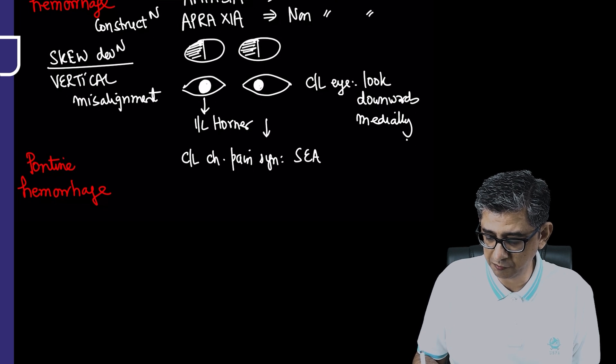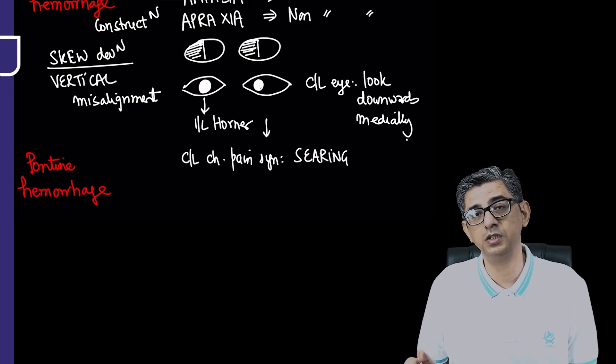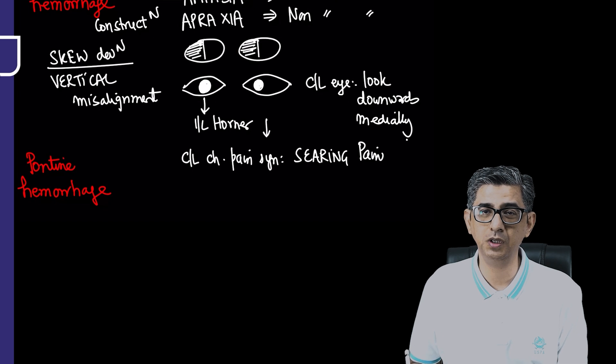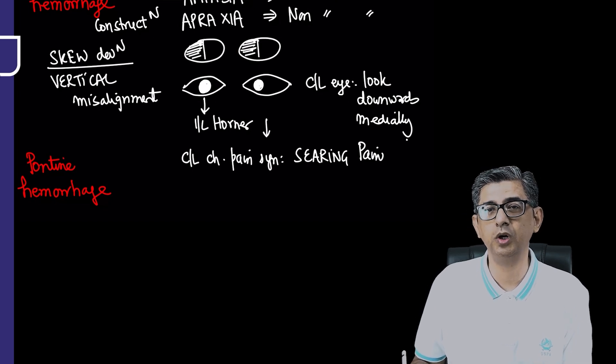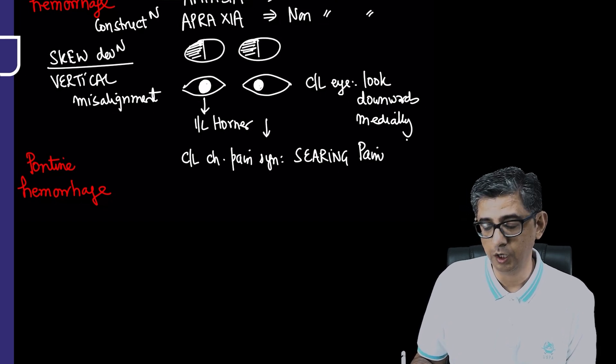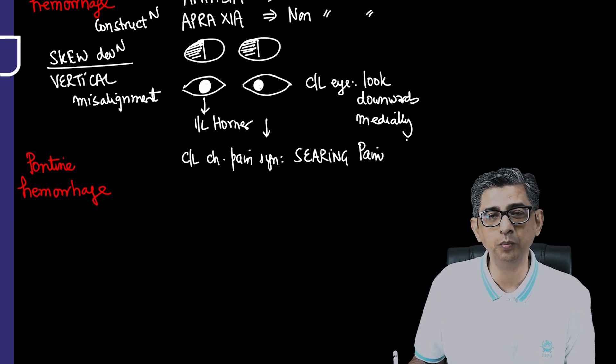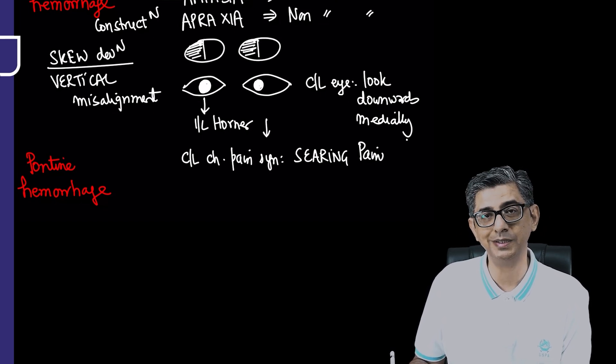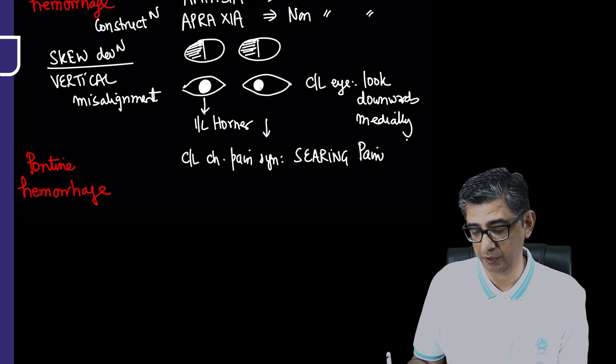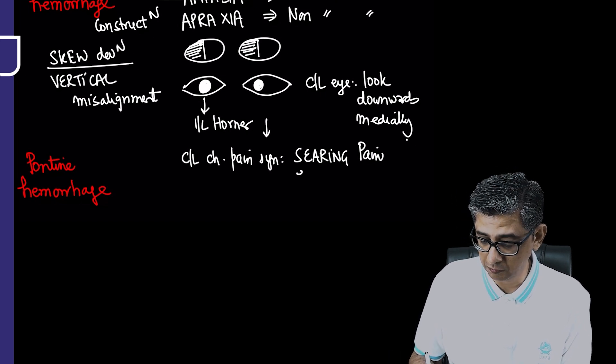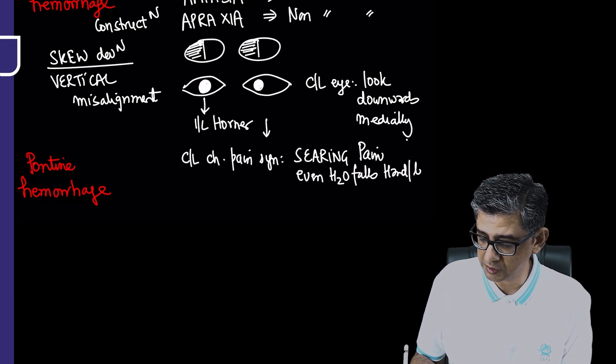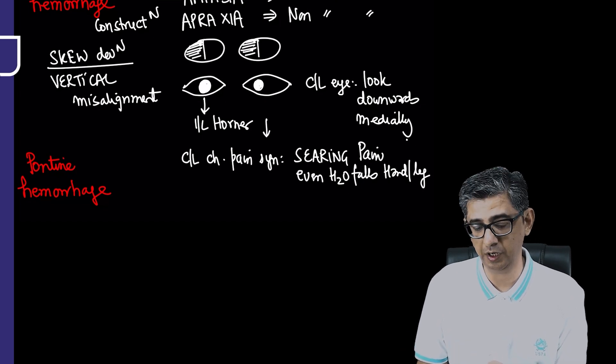These patients might develop contralateral chronic pain syndrome. The same patient with severe hemiplegia, two months after stroke, is still bedridden. When the nurse does sponging, every time water touches the body, over the contralateral half there would be searing or burning pain. The patient may wince or show expressions indicating discomfort. There's searing pain even when water falls on the hand or leg.